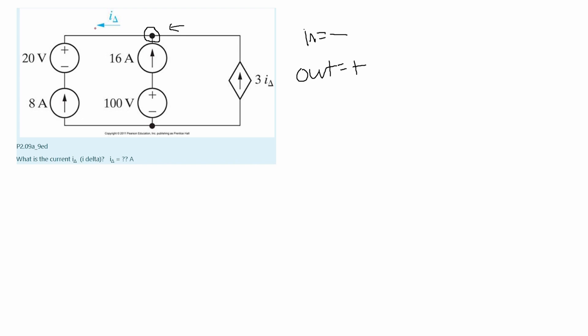So the first one we're going to look at is this red one right here. It is going out of our node, it's going away from it. That means this is positive. So when we write this we are going to have a positive I delta.